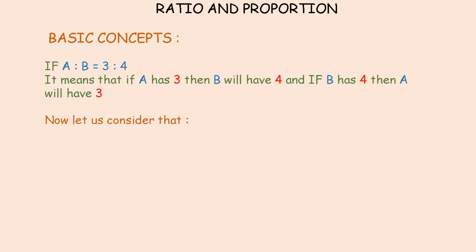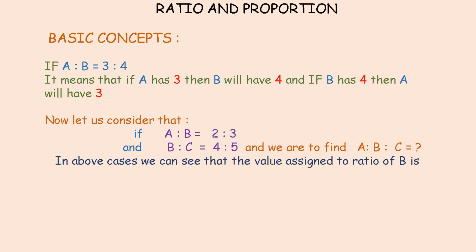Now let us consider that if A ratio B is 2 ratio 3 and B ratio C is 4 ratio 5, and we are to find A ratio B ratio C. In above cases we can see that the value assigned to B is different in both the cases.